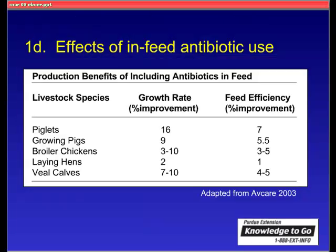This table shows the effects on other livestock species. In broiler chickens, improved growth rates of 3% to 10% are observed. Laying hens show improved growth rates of 2%, and veal calves show improvement of 7% to 10%.